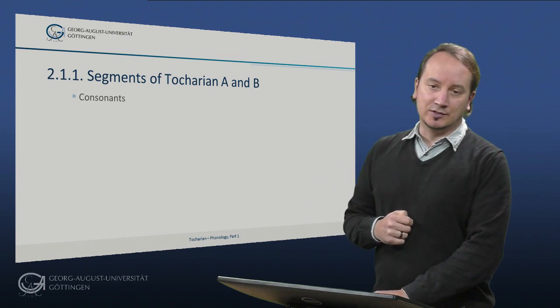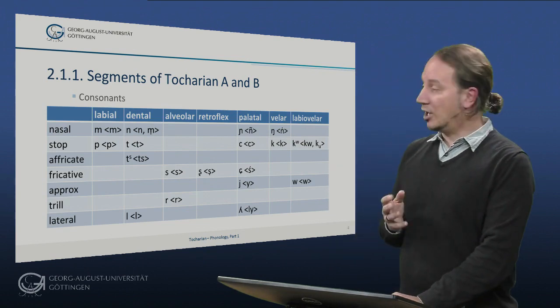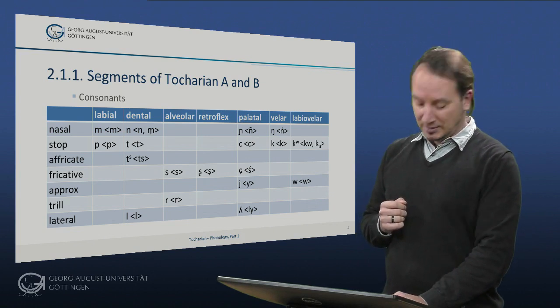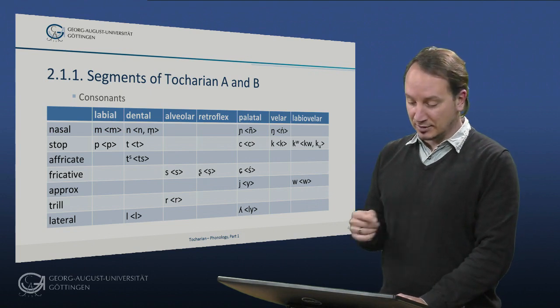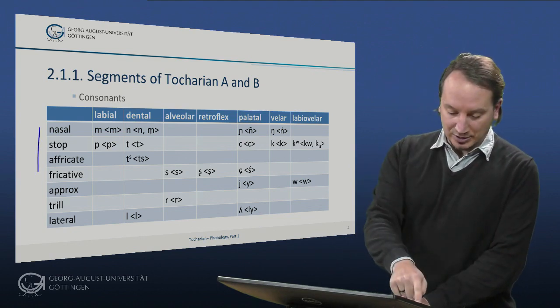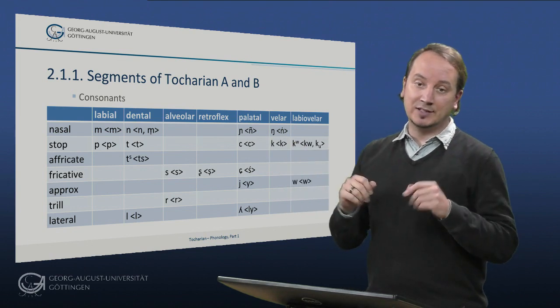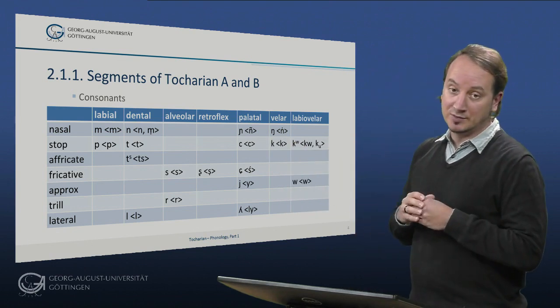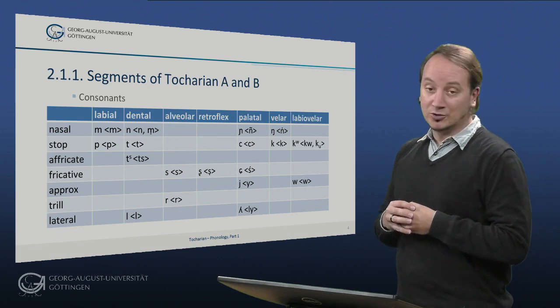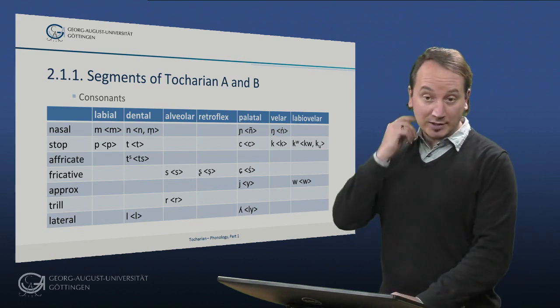So let's have a look at the consonants. This again is the inventory for both languages which is very convenient and this chart is arranged in the classic way of the IPA, the International Phonetic Association. We have places of articulation up here and we have the manners of articulation down here. One striking feature of the overall system is that there are no distinctions in voicing or aspiration that we know and love from the classical languages like Vedic Sanskrit and Homeric Greek. These contrasts were already lost on the way from proto-European to proto-Tocharian.